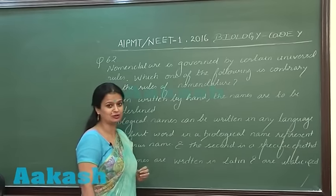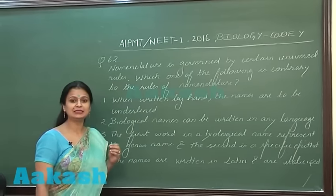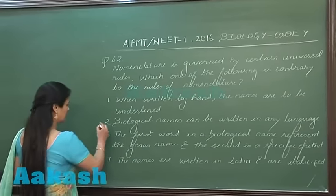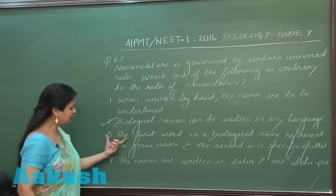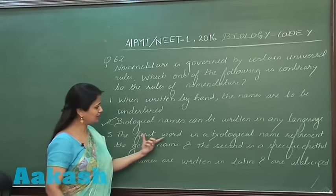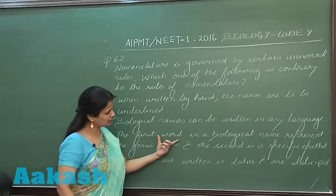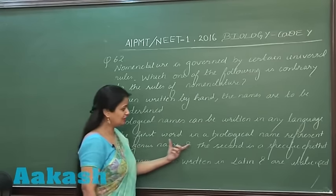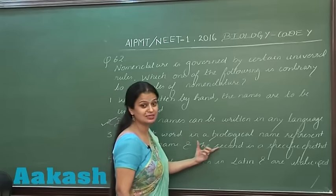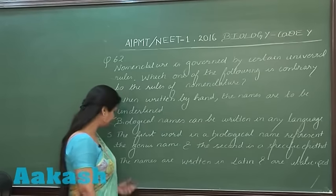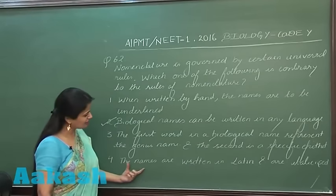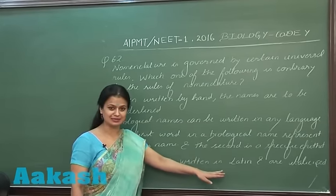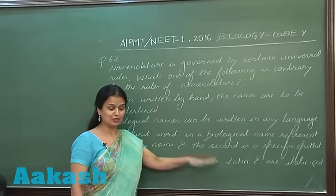The first word in a biological name represents the genus — that's right. The second word is the specific epithet. The names are written in Latin and are italicized.